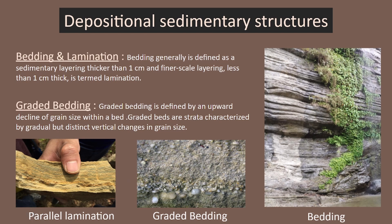Here you can see graded bedding. Normal graded bedding shows a fining upward sequence. Graded bedding can be defined as an upward decline of grain size within a bed. Graded beds are strata recognized by a gradual change in grain size.